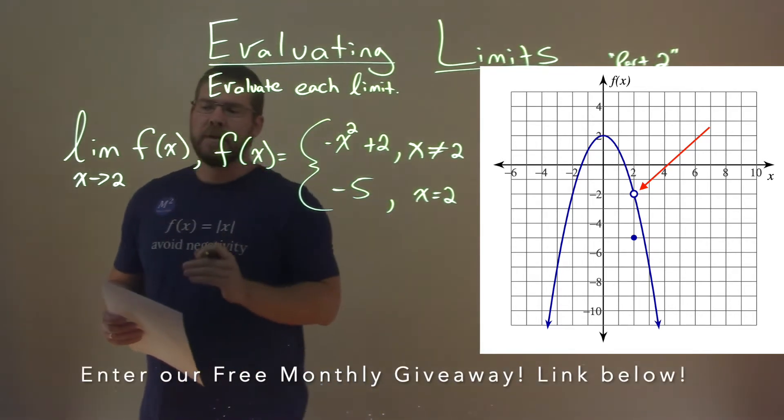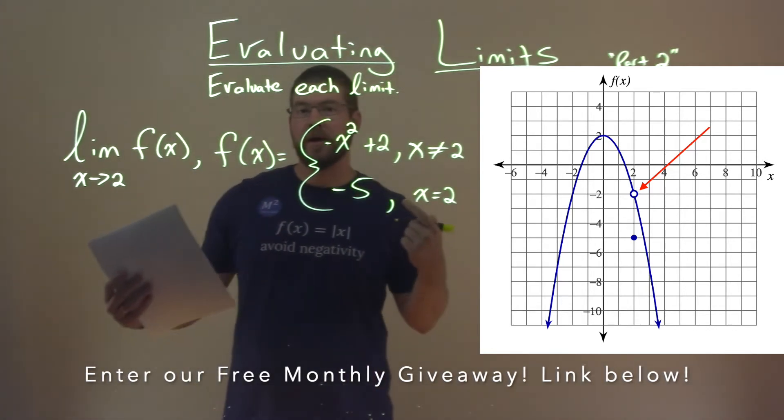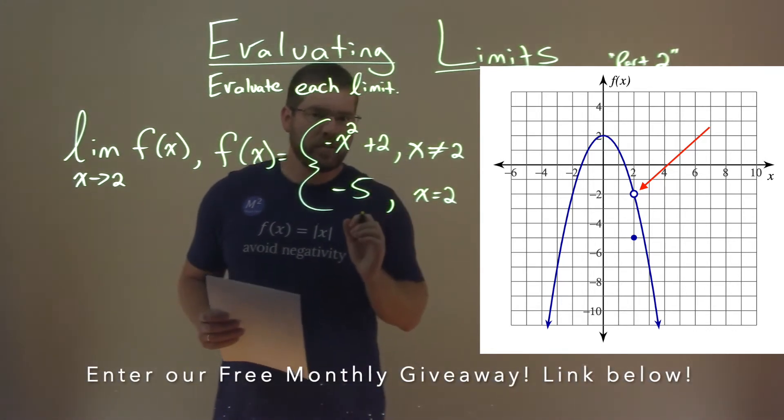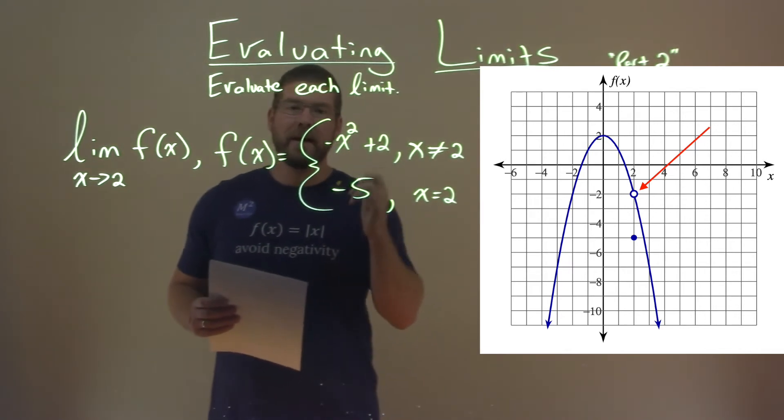Now, when we take the limit as x approaches 2, we need to see where it's approaching from the left and right. And it's not equal to when x equals 2, but it's what it's approaching as we get close to a positive 2.